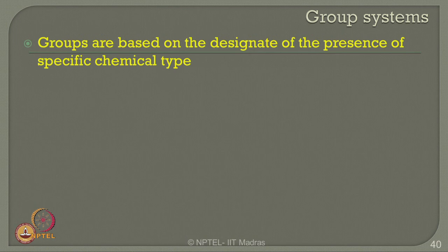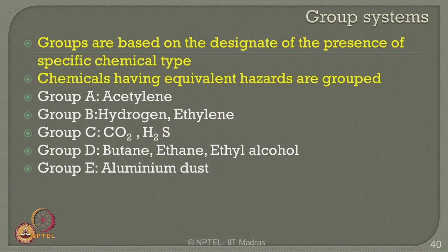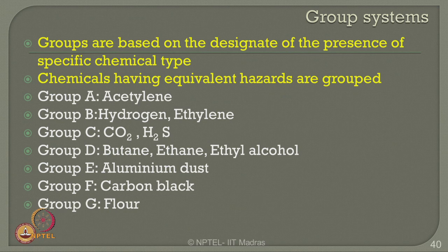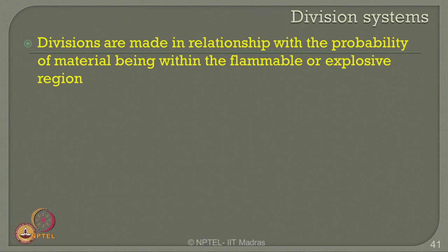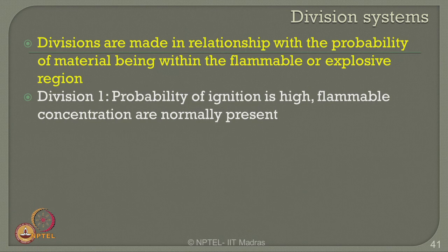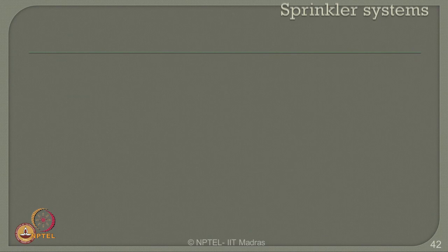Groups are based on the designation of specific chemical types: Group A is acetylene, Group B is hydrogen and ethylene, Group C is carbon monoxide and hydrogen sulfide, Group D is butane, ethane, and ethyl alcohol, Group E is aluminum dust, Group F is carbon black, and Group G is flour. Division systems as recommended by OSHA guidelines are based on probability of material being within the flammable or explosive region. Division 1 indicates probability of ignition is very high and flammable concentration is normally present. Division 2 indicates hazard only at abnormal conditions, with flammable materials normally contained in closed containers.